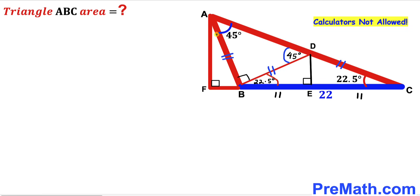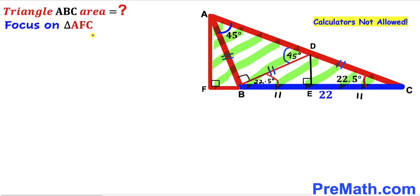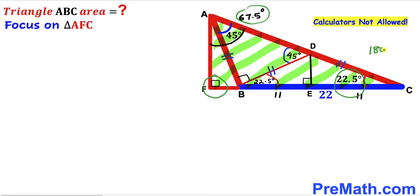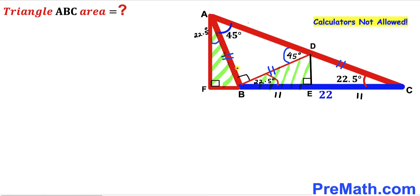In this next step I have created auxiliary right triangle AFB such that angle AFB is 90 degrees. Focusing on triangle AFB: we know angle ACB is 22.5 degrees, angle AFB is 90 degrees, so therefore the remaining angle has got to be 67.5 degrees, since the sum of all three interior angles must equal 180 degrees. We can also observe that angle BAC is 45 degrees, so the tiny angle BAF has got to be 22.5 degrees.